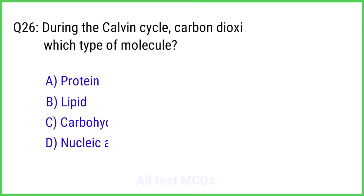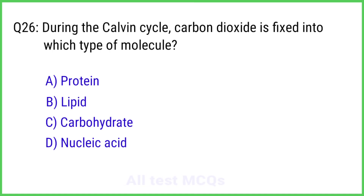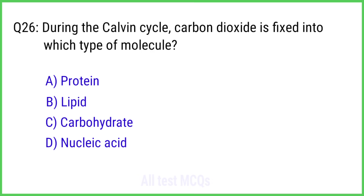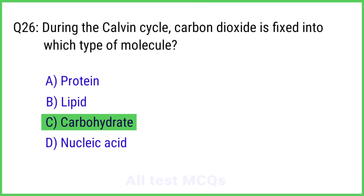Question No. 26. During the Calvin cycle, carbon dioxide is fixed into which type of molecule? The right answer is Option C: Carbohydrate.